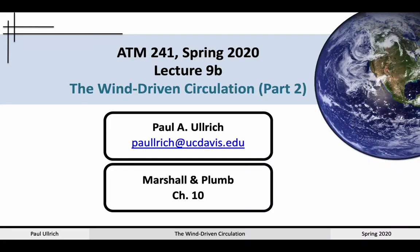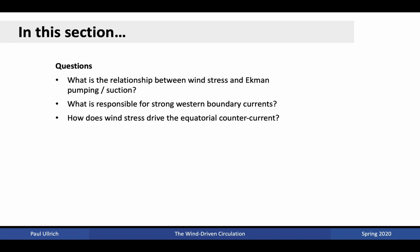Hello all, welcome back to Atmospheric Dynamics. We're continuing our discussion today of the wind-driven circulation. The reading is still Marshall and Plum, Chapter 10. The questions answered in this section are: what is the relationship between wind stress and Ekman pumping and suction? What is responsible for strong western boundary currents? And how does wind stress drive the equatorial counter current?